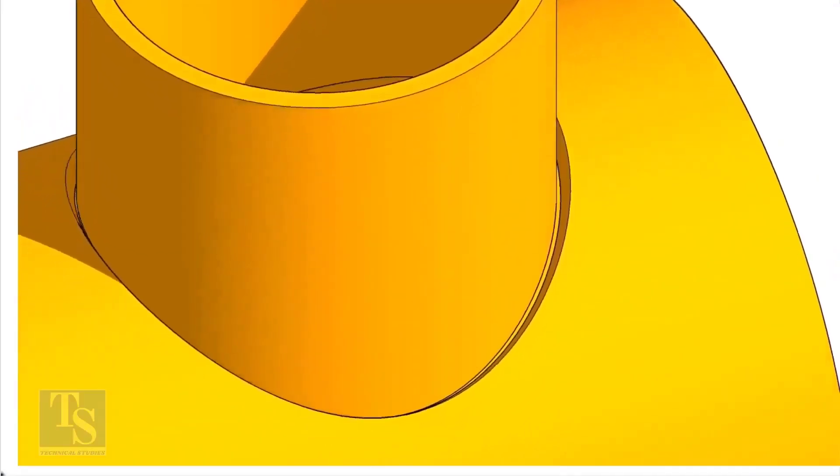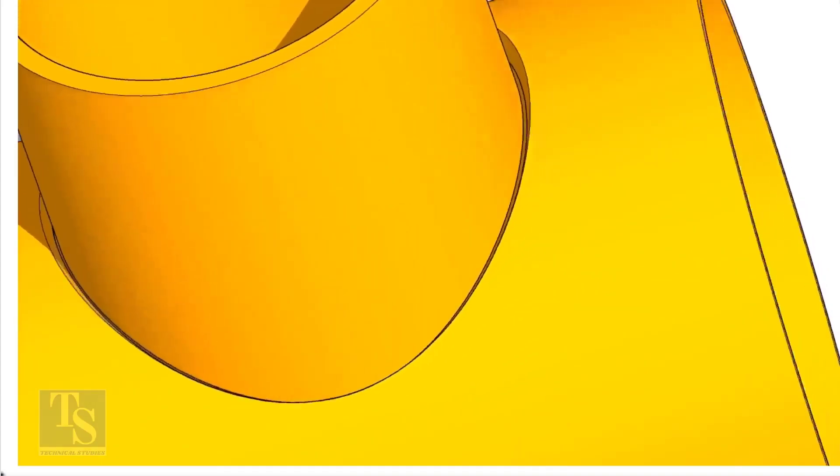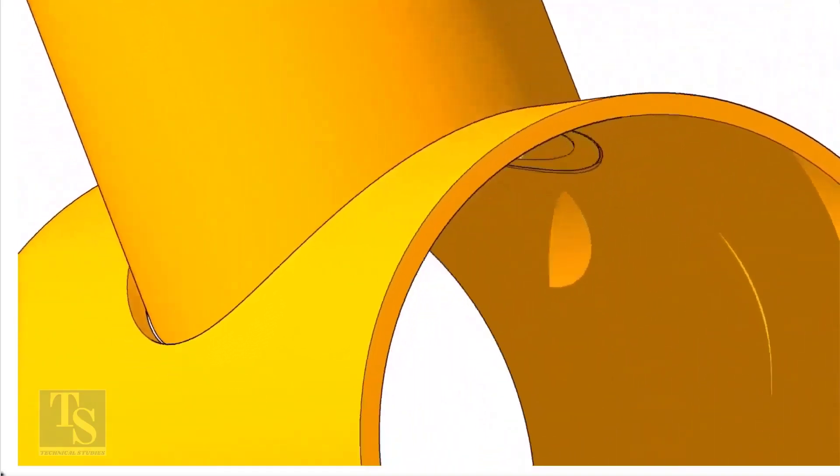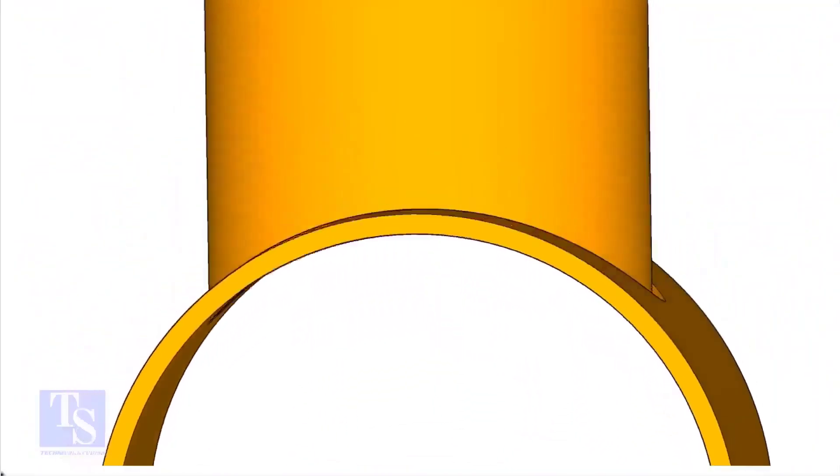On the branch pipe, there is no bevel preparation, but the cut-back cut is done. The end of the branch is level with the inside diameter of the header pipe.